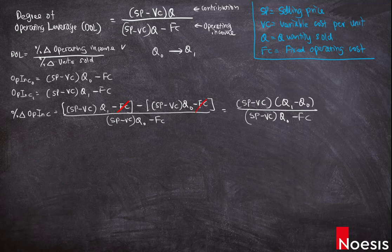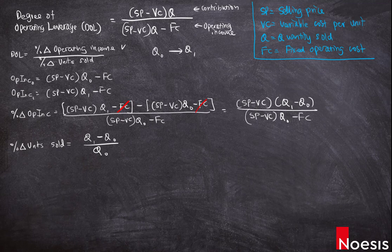The percentage change in units sold equals (Q₁ − Q₀) divided by Q₀. This is the percentage change in units sold.